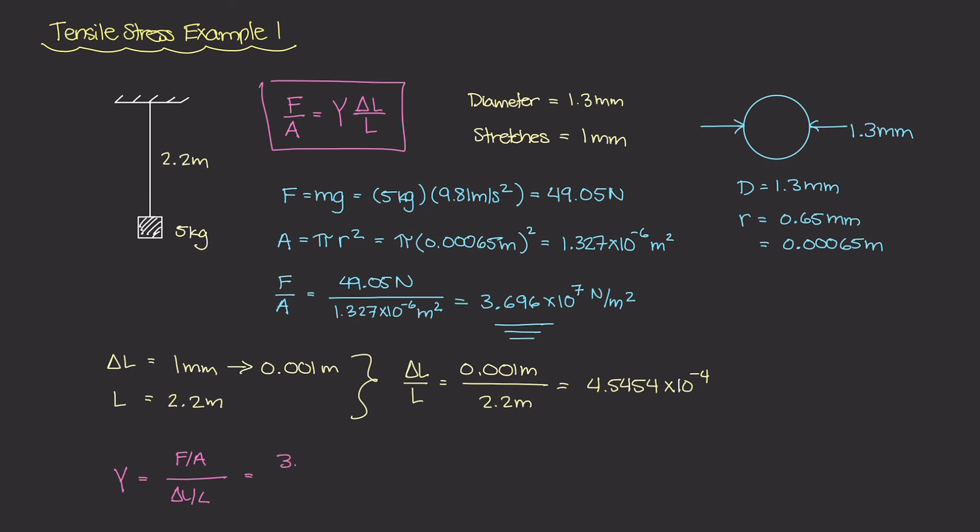And this turns out to be 3.696 times 10 to the 7th newtons per meter squared, divided by the strain value of 4.5454 times 10 to the minus 4th. And again, because this strain is dimensionless, our Young's modulus is going to take on the units of stress, which is newtons per meter squared. So if I plug this into my calculator, I get about 8.13 times 10 to the 10th newtons per meter squared. That is the Young's modulus of this wire.